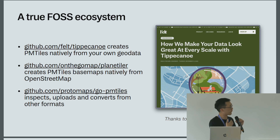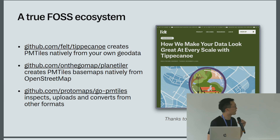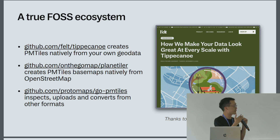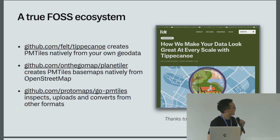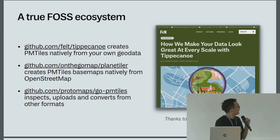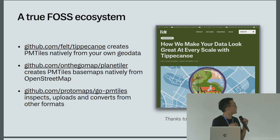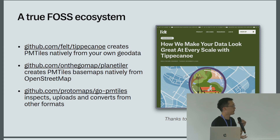To emphasize the FOSS ecosystem point: Protomaps has developed in the past few months to build out the ecosystem for creating and deploying PMTiles. The Tippecanoe project for generating vector tilesets from your own geodata now supports PMTiles natively — you can go straight from GeoJSON or anything GDAL can read into vector tiles. That's an open-source project funded generously by Felt. The Planet Tiler project, a Java program for creating OpenStreetMap base maps, can also now create PMTiles natively, as well as a conversion utility called go-pmtiles — a single binary command-line tool to generate PMTiles from other formats, interact with cloud storage, and do basic read operations. It's available on GitHub for Windows, Linux, and Mac.